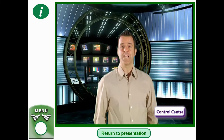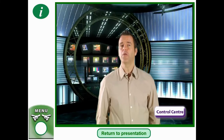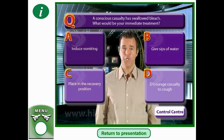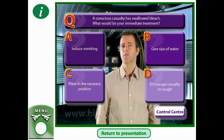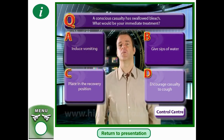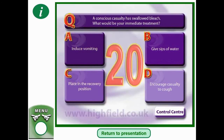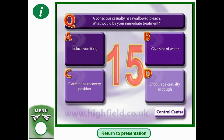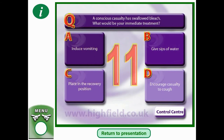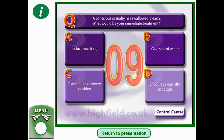A conscious casualty has swallowed bleach. What would be your immediate treatment? A: Induce vomiting. B: Give sips of water. C: Place in the recovery position. Or D: Encourage casualty to cough. With bleach, we don't want to bring it back up — we want to start diluting it. So the answer would be B.